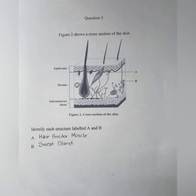Figure 2 shows a cross section of the skin in three layers: the epidermis, the dermis, and the subcutaneous layer or tissue. The corresponding question requires you to label A and B. A is the hair erector muscle, and B is a sweat gland, because we can see the sweat pore.